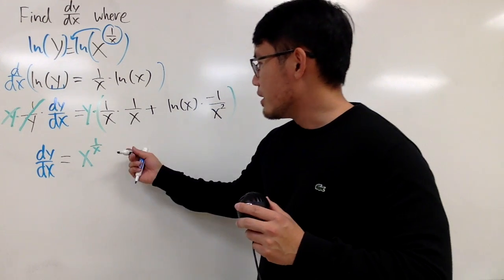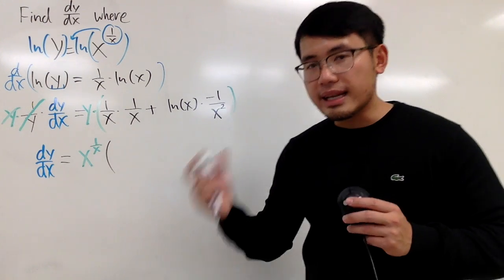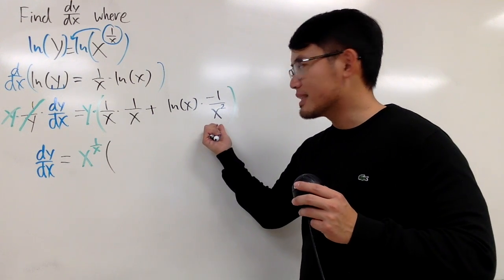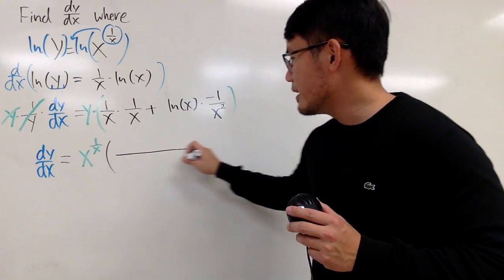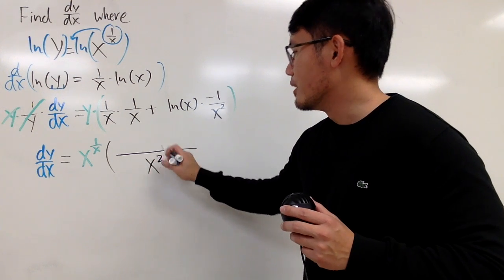Right here, x times x is x squared, and notice we also have x squared here. So we can combine these two fractions with x squared in the denominator.